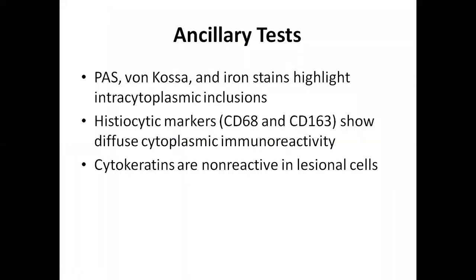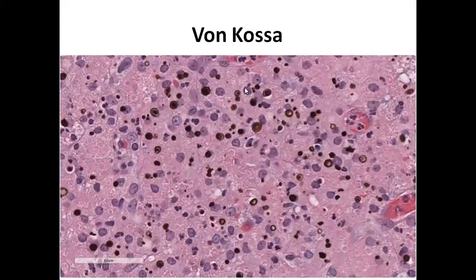In terms of ancillary tests: to highlight the histiocytes, we commonly perform CD68, which stains histiocytes. To highlight those calcium particles or calcified bacteria, we commonly use Von Kossa stain. Without highlighting those cytoplasmic crystals, we cannot diagnose Malakoplakia. We also perform cytokeratins, which are usually negative in those histiocytes but positive in the overlying epithelium. The Von Kossa stain is a black stain which is positive in those cytoplasmic lesions and highlights the Michaelis-Gutmann bodies.